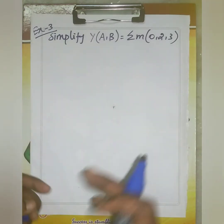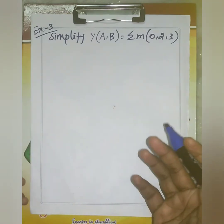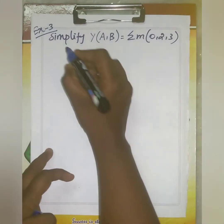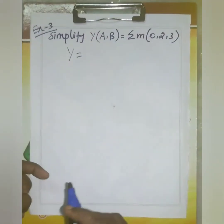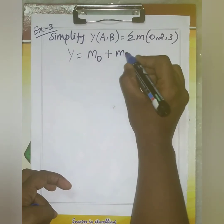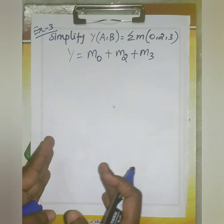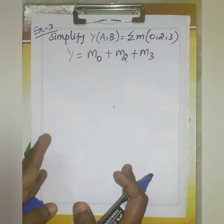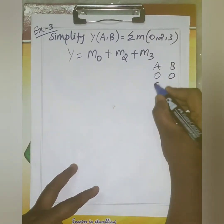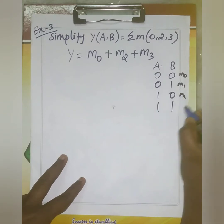This is the third exercise. Simplify the expression given as summation m(0, 2, 3). The small m indicates these are min terms. For two variables A and B, we write the truth table: 00 (min term 0), 01 (min term 1), 10 (min term 2), 11 (min term 3).